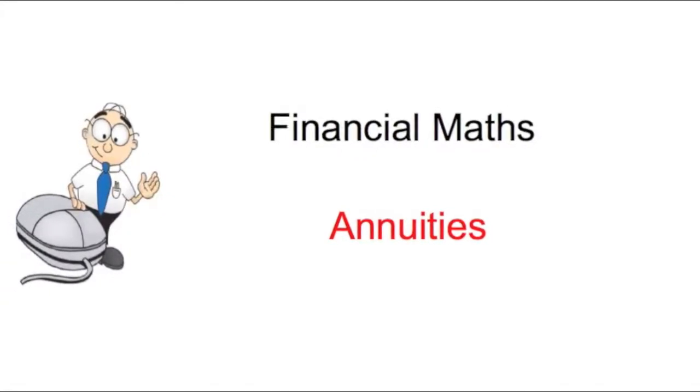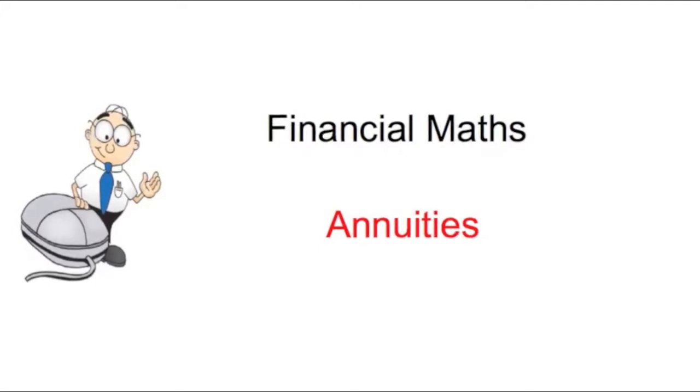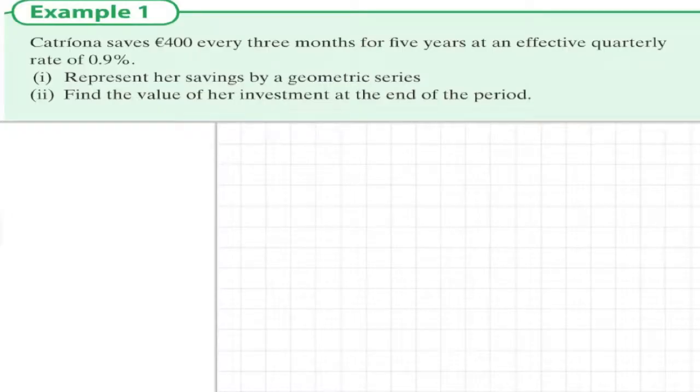Financial maths: annuities. An annuity is an installment saving. Katrina saves 400 euros every three months for five years with a quarterly rate of 0.9%.